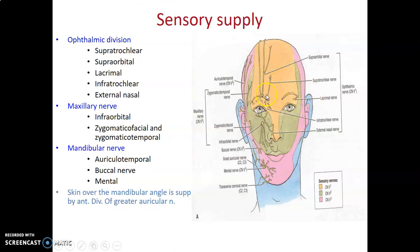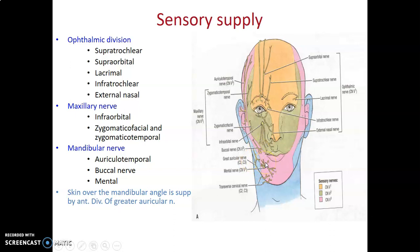The sensory supply to the face is mainly by the trigeminal nerve, the fifth cranial nerve. The upper part is innervated by the ophthalmic division, with supratrochlear, supraorbital, infratrochlear, and external nasal nerves. The middle portion is innervated by the maxillary division, with zygomaticotemporal, zygomaticofacial, and infraorbital nerves. The lower part is innervated by branches of the mandibular division, including the buccal nerve and mental nerve. Other nerves like the transverse cervical nerve may also send some branches.